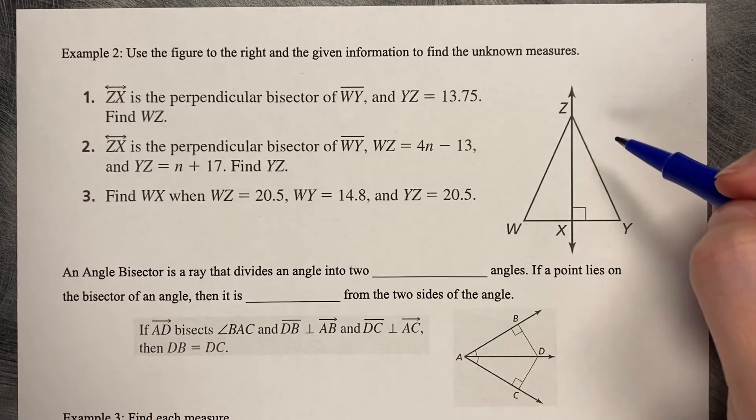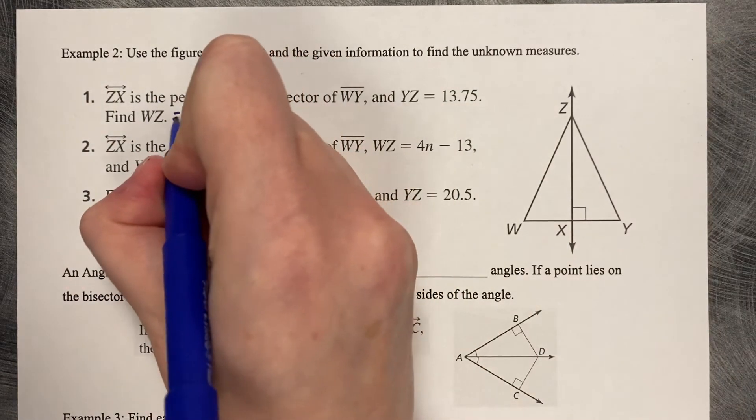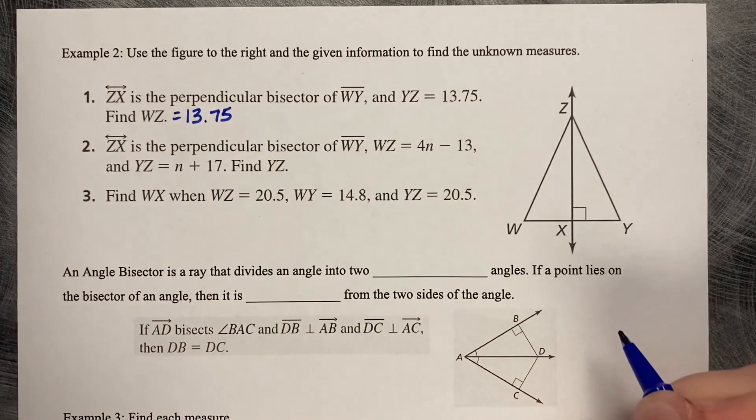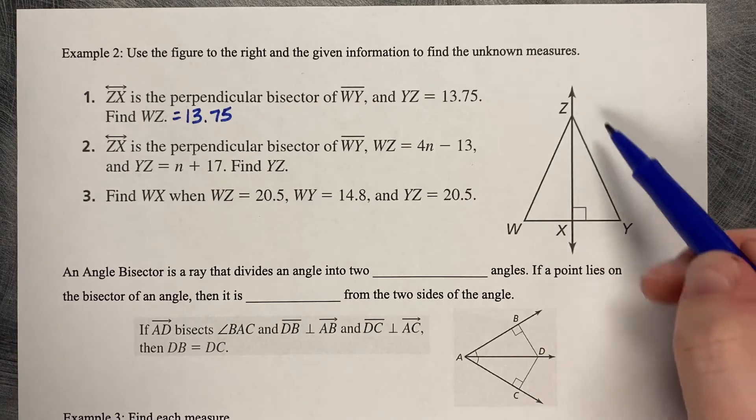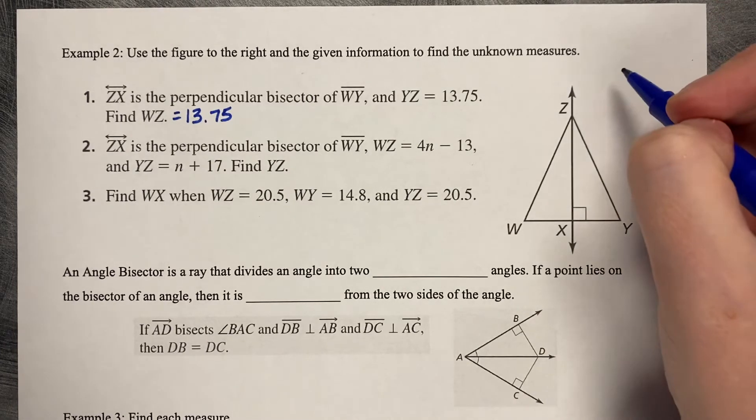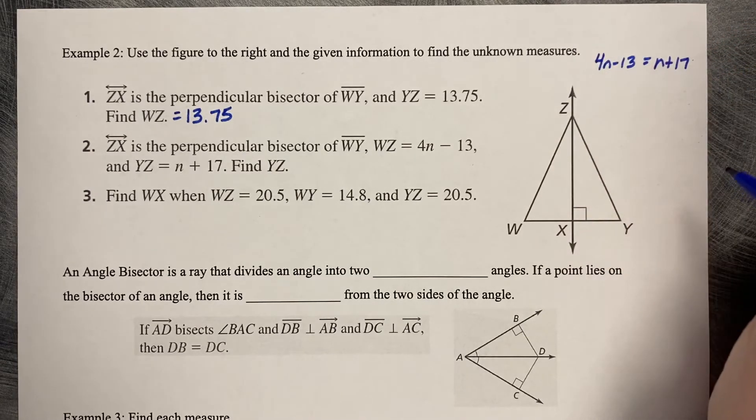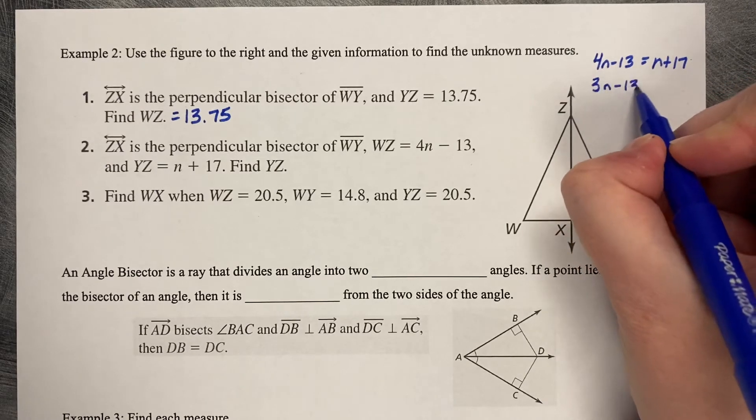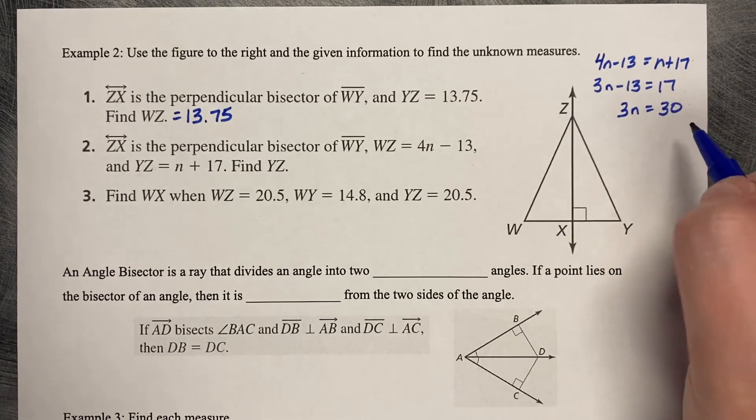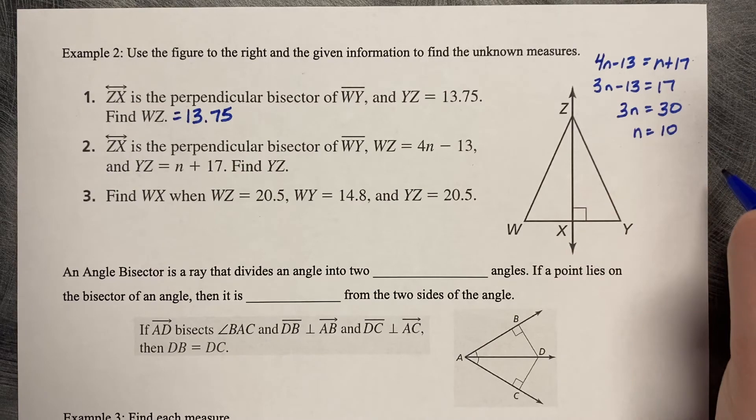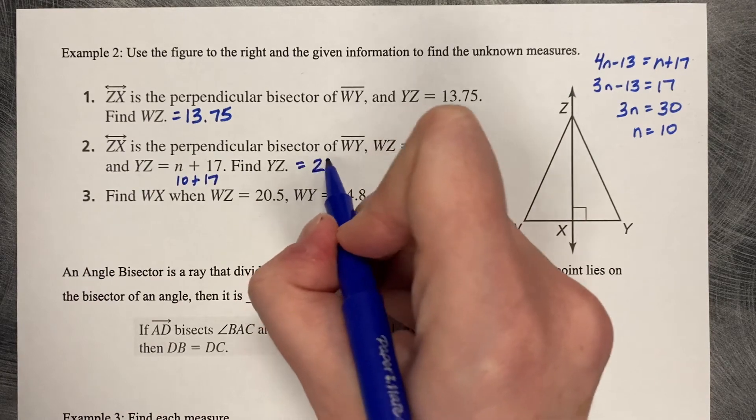If YZ is 13.75, then WZ must also be 13.75. WZ is 4N minus 13 and YZ is N plus 17. So those must be equal. I'm going to do it off to the side here. So 4N minus 13 equals N plus 17 minus N. 3N minus 13 equals 17. Add 13. 3N equals 30 divided by 3. N equals 10. And then we plug it back in. 10 plus 17. So YZ must be 27.